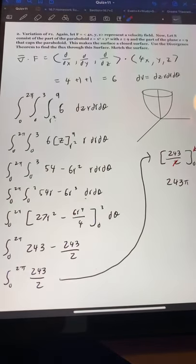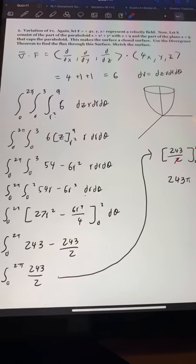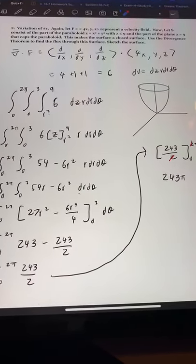Okay, hi guys, this is number 2, a variation of number 1. We have a vector field which is F equals (4x, y, z).